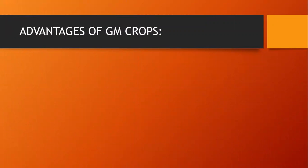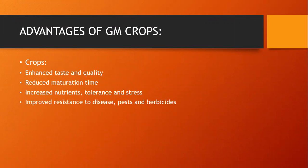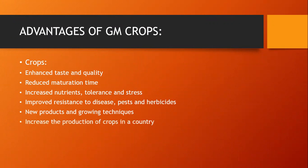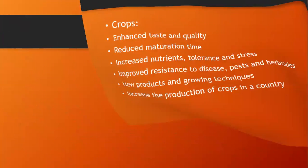Some advantages of genetically modified crops include enhanced taste and quality, reduced maturation time, increased nutrients, and tolerance to stress. They have improved resistance to disease, pests, and herbicides. New products and growing techniques also carry characteristics of genetically modified organisms and they increase crop production in the country.